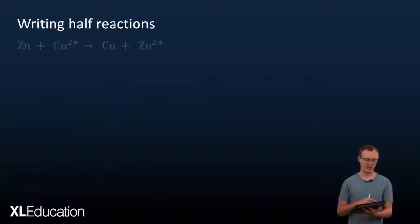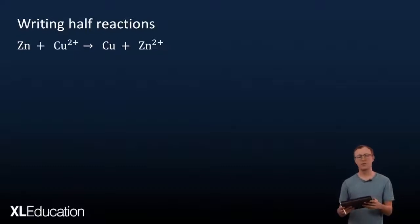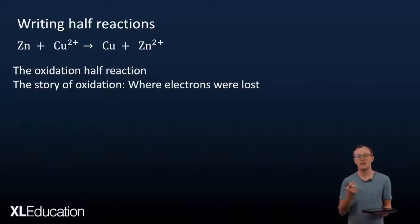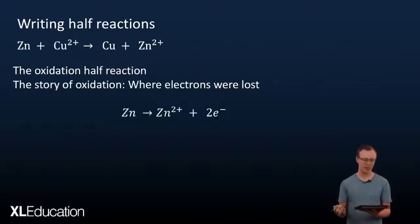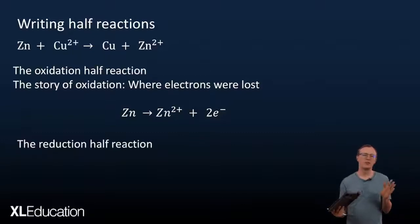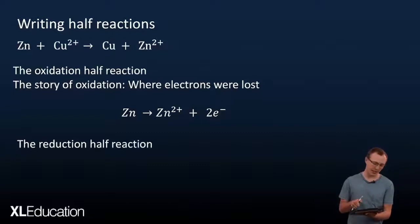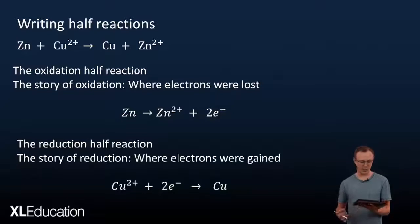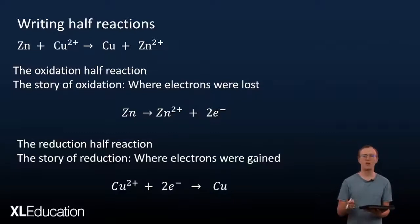Let's look at writing half reactions. We have a reaction where a zinc atom reacts with a copper ion to form copper and a zinc ion. The oxidation half reaction is the story of where oxidation took place. Zinc underwent oxidation because it went from an atom to a positively charged ion — going from neutral to positively charged means it lost electrons. The reduction half reaction tells us where reduction took place: copper ions, Cu2+, gained electrons to form the copper atom. Going from a positively charged ion to neutral means electrons were gained.